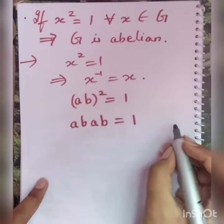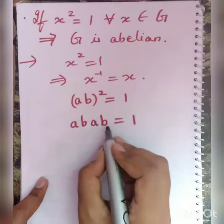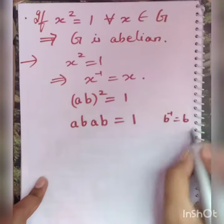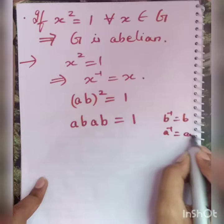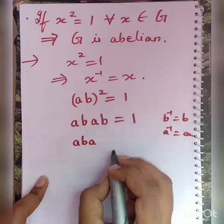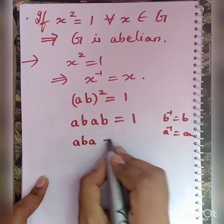Now multiply by b⁻¹, and since b⁻¹ = b and a⁻¹ = a, we get aba multiplied by b equals b.